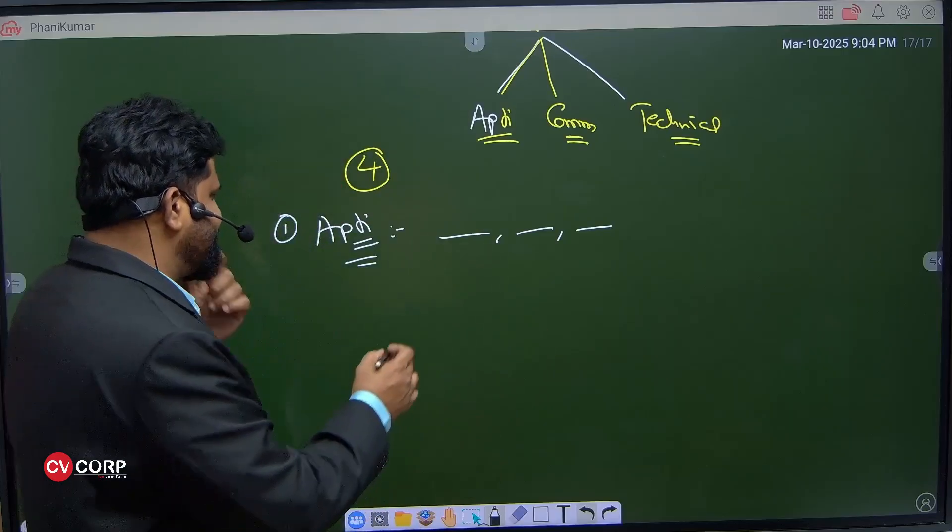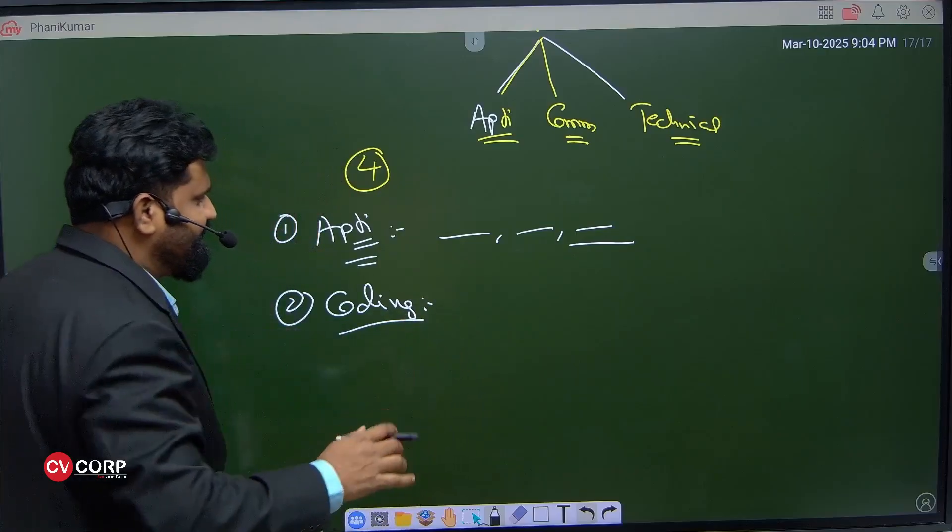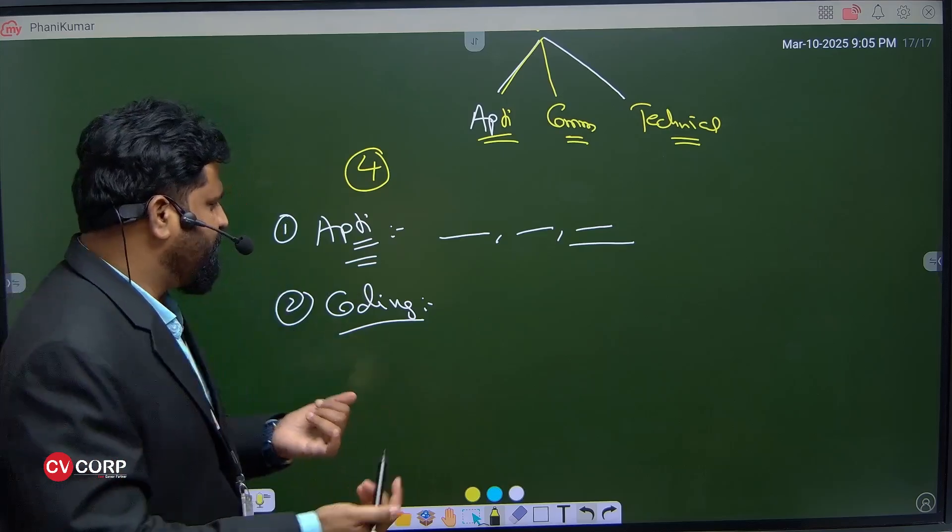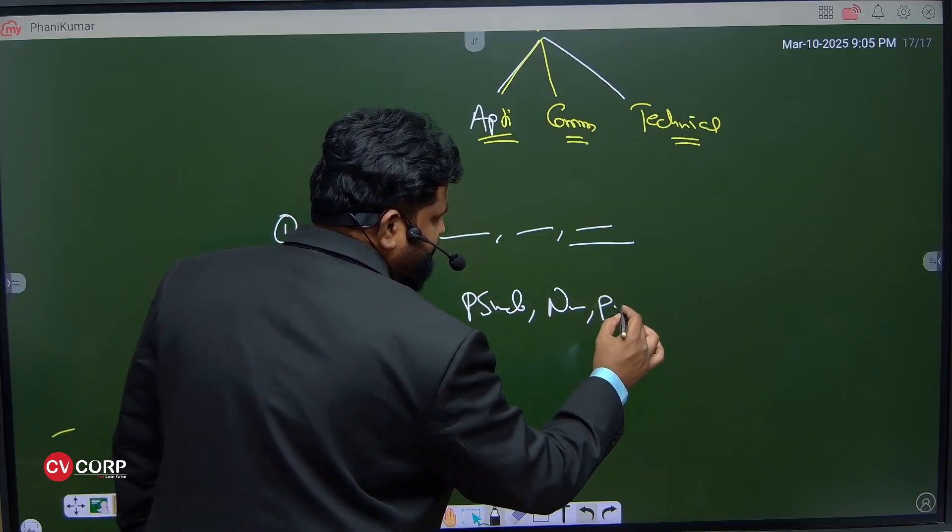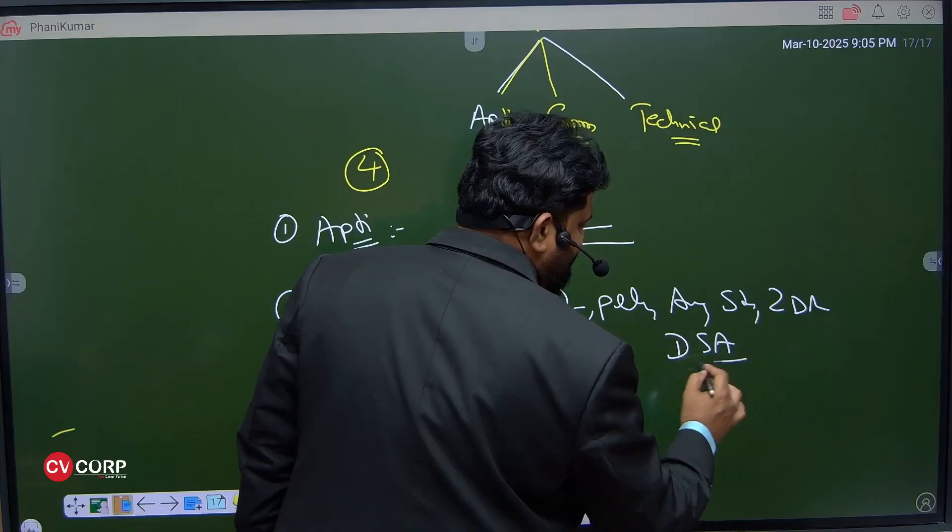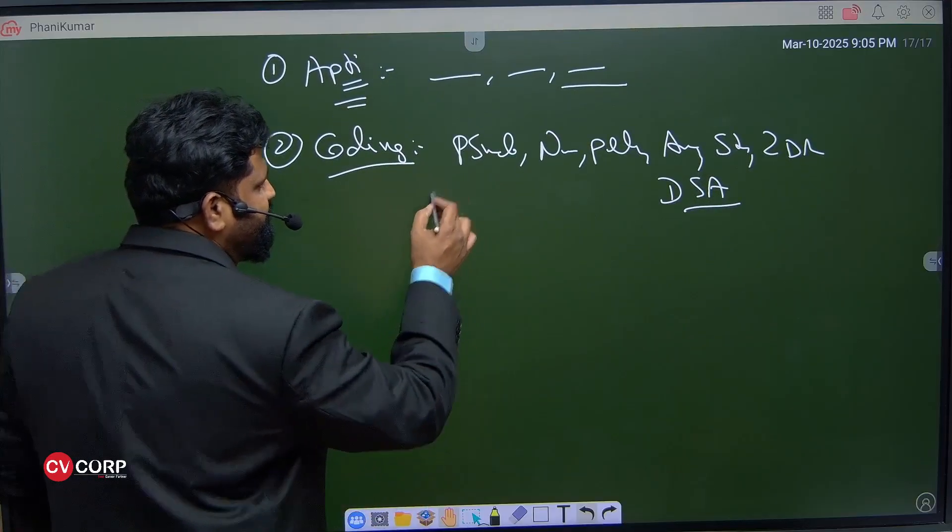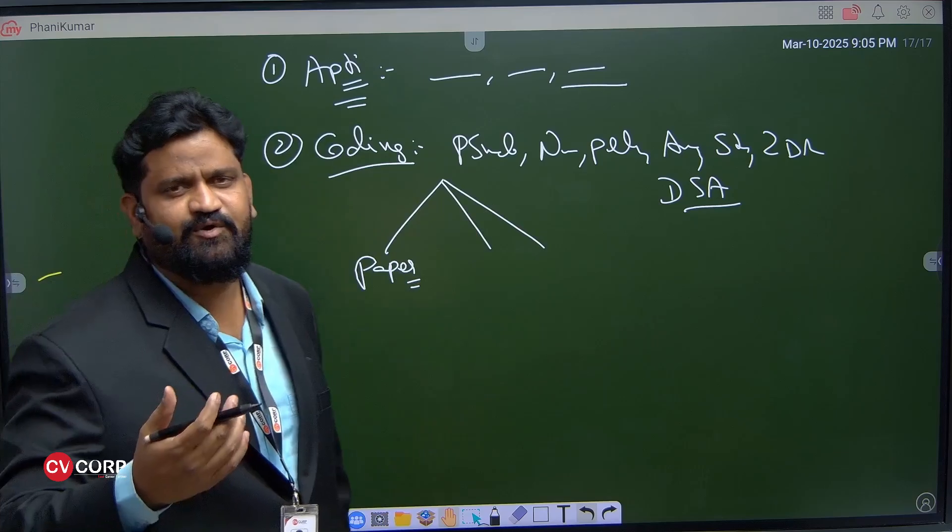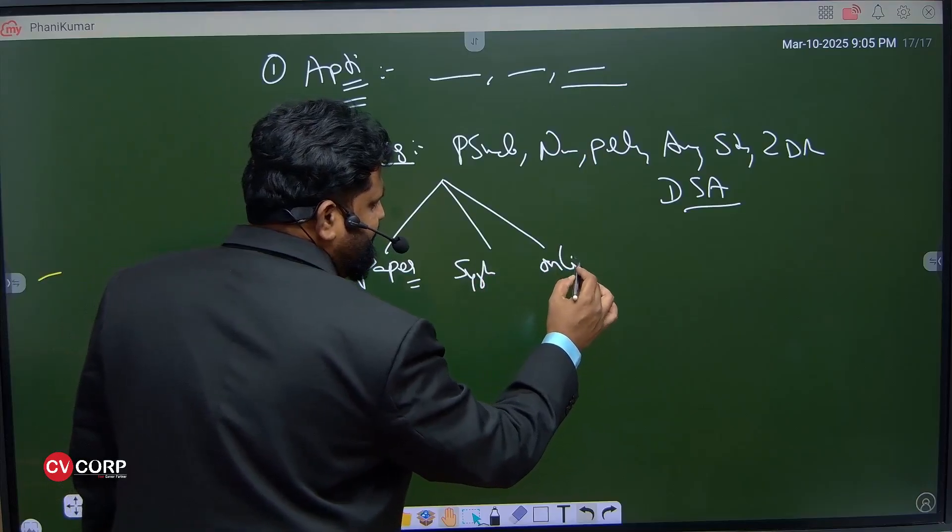Module two is about the coding side. When you go to any company interview, they will have a coding round to test your coding skills. All the topics starting from pseudo codes, numbers, patterns, arrays, strings, 2D arrays, and DSA - we help you to write all this code in a detailed way in three different ways: paper-based coding, system-based, and online coding challenges on coding platforms.